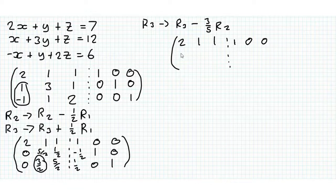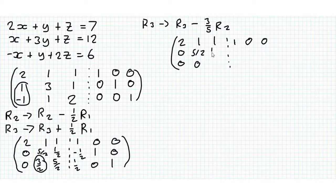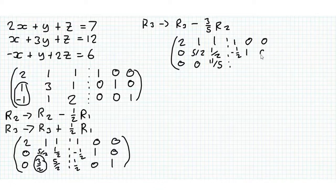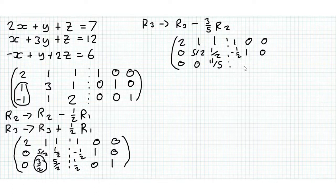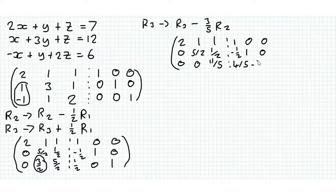And then it gives us a 0 here that we wanted, 5 over 2 remains, half still here, and this is now 11 over 5. We have minus 1 half, 1, 0, and then on the bottom 1, 0, 1 half. Here we have 4 fifths, minus 3 fifths, 1. That's not neat at all but you get the point.